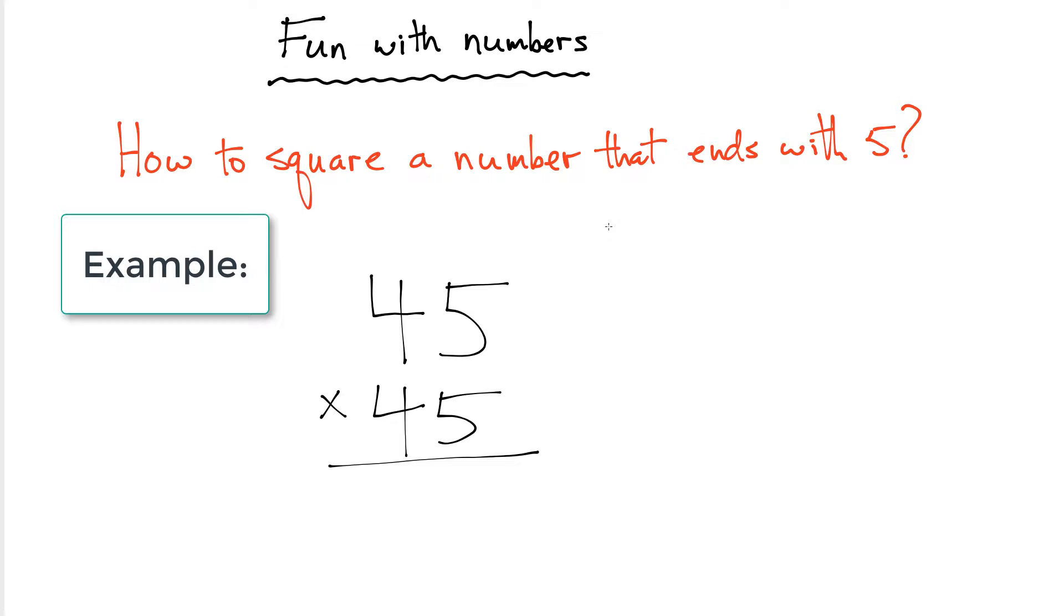So here's a nice little example. I want to square 45, so I want to multiply 45 times 45. The first thing to know about any time you square a number that ends with 5, it's always going to end in 25.